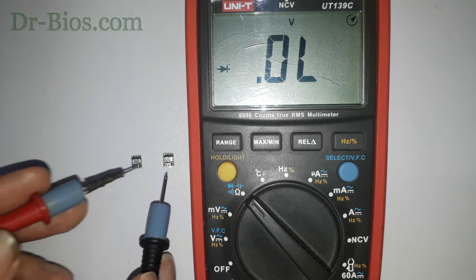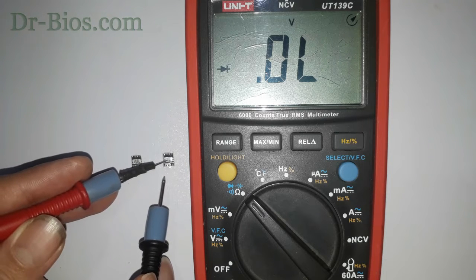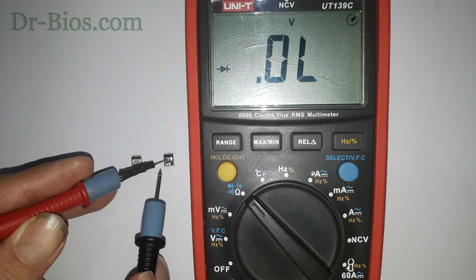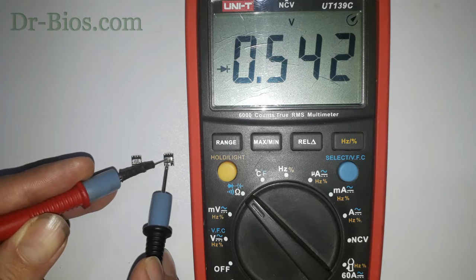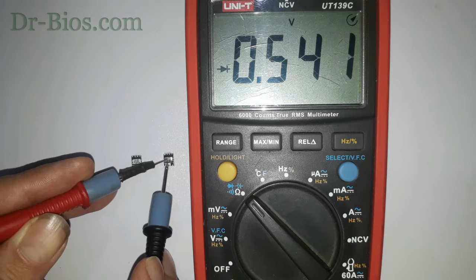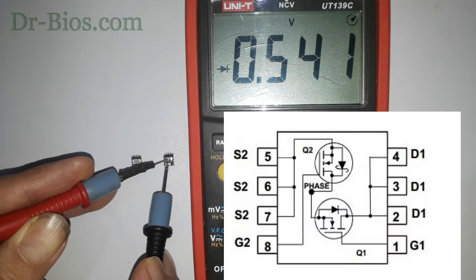Let me test this MOSFET first. I place a probe on source pin and the other probe on drain pin of high MOSFET. As you see, 0.541 V appears. This means that the diode used in this MOSFET is silicon.